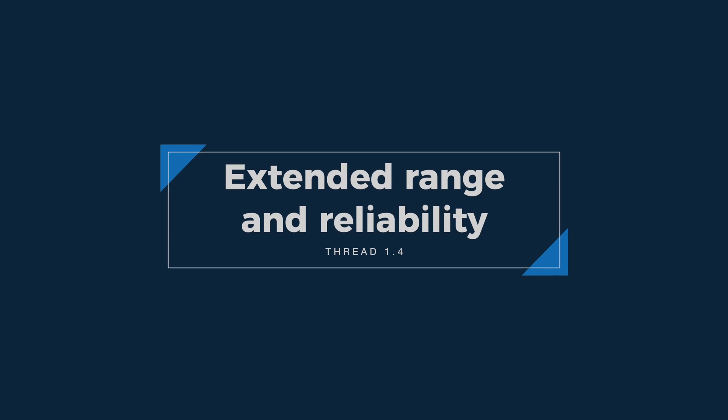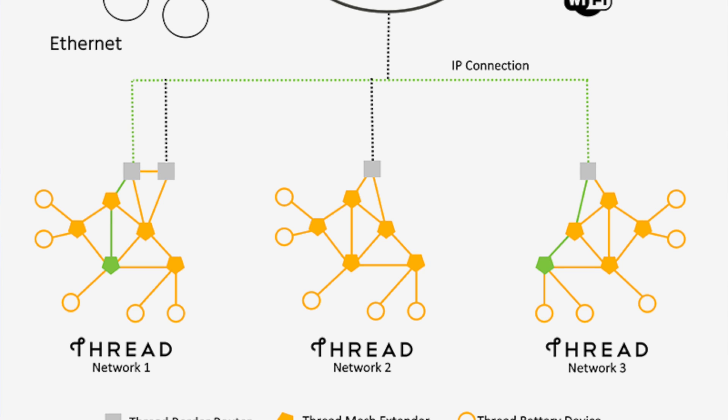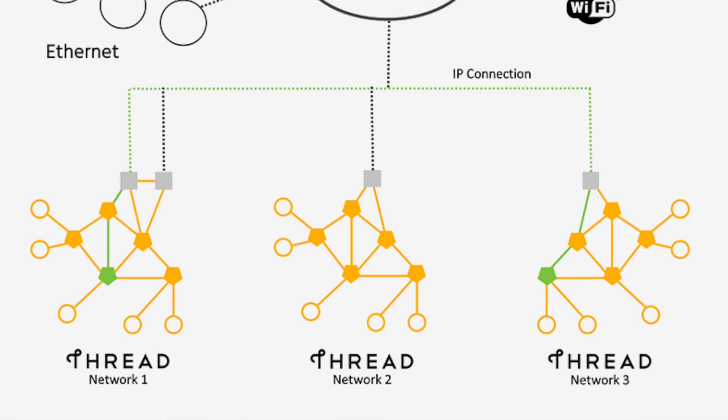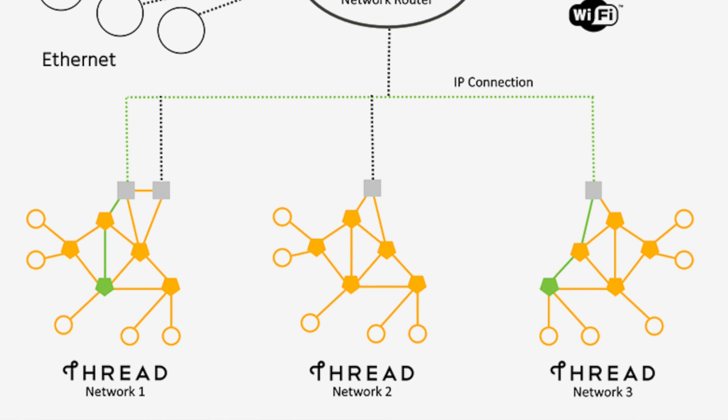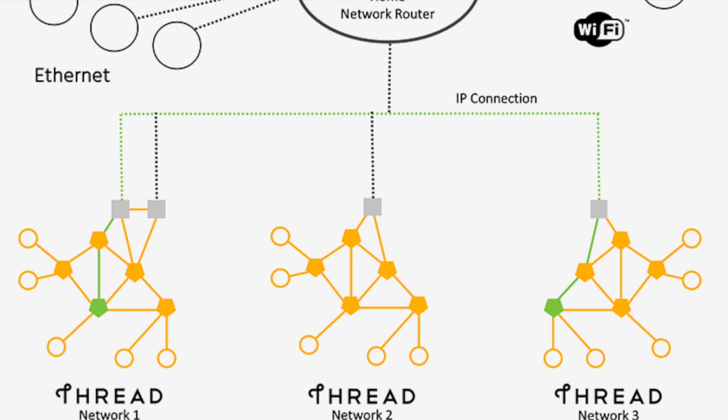Number three: extended range and reliability. Thread 1.4 allows border routers to use both Wi-Fi and Ethernet to extend the range of a Thread network, a bit like how Wi-Fi extenders work. So if half of your house is a dead zone for Thread, by adding another border router there, you'll have the existing Thread network extended over to that area. This also relates to point one, when we talked about credential sharing between border routers.